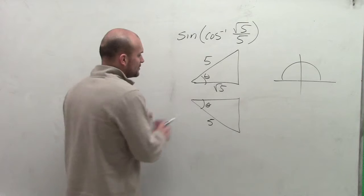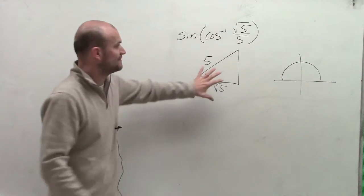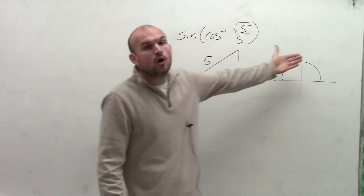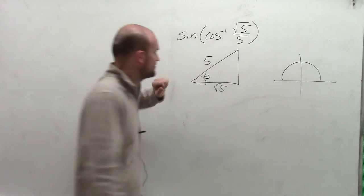So therefore, the only triangle that we can construct for the inverse cosine of square root of 5 over 5 is going to be this triangle right here, which therefore would be in our first quadrant.